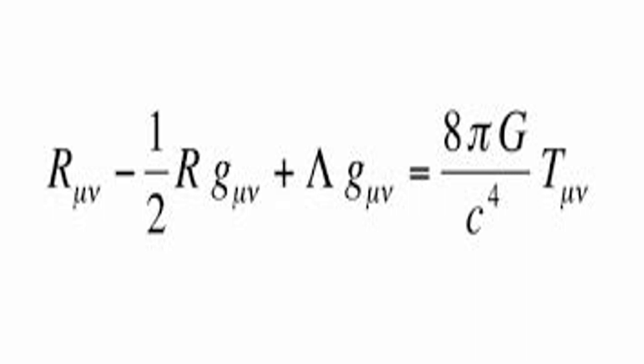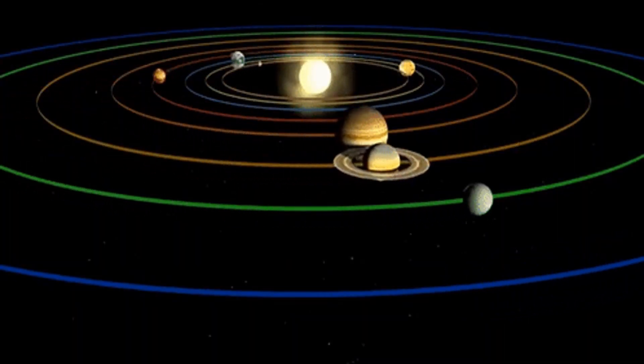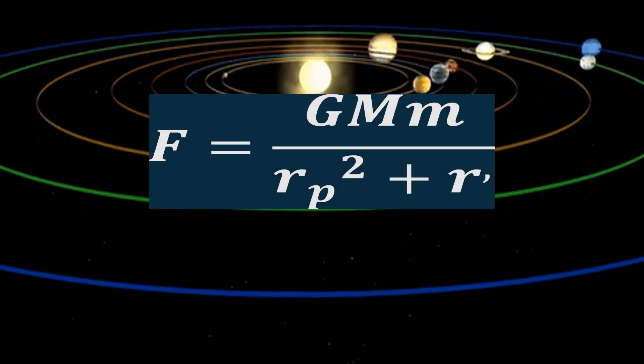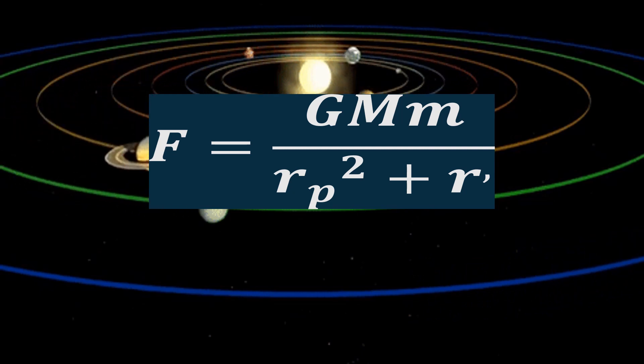When you solve Einstein's equations for the solar system where gravity is not that strong, you get a force equation identical to Newton's equation, but for the addition of some term in the denominator which suggests a slightly weaker gravitational force than proposed by Newton.